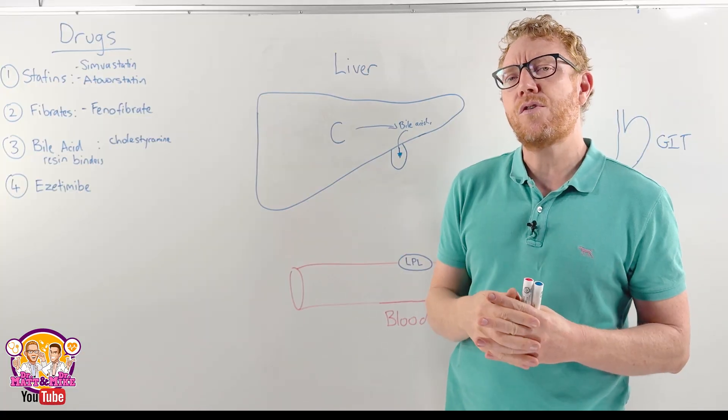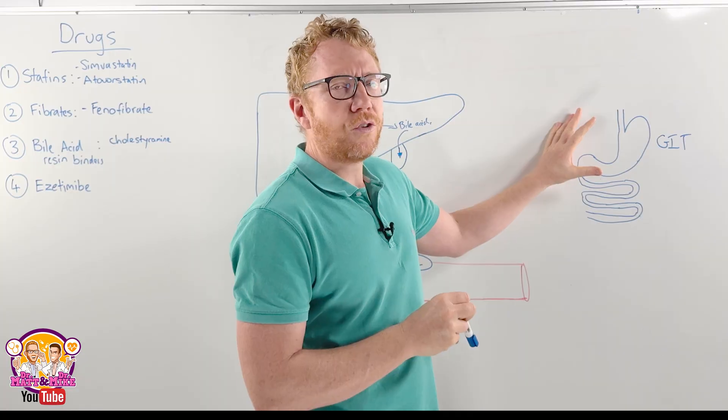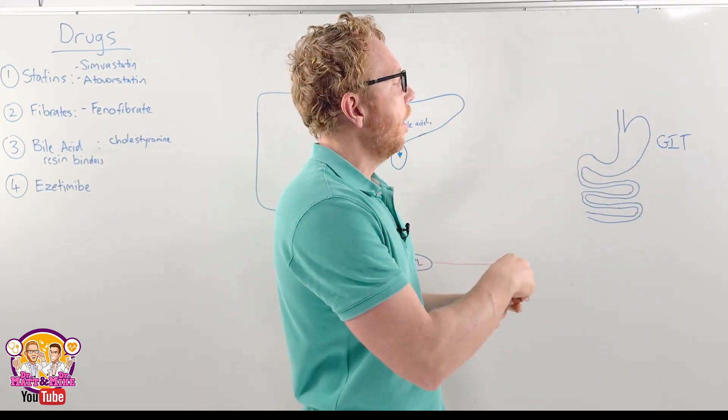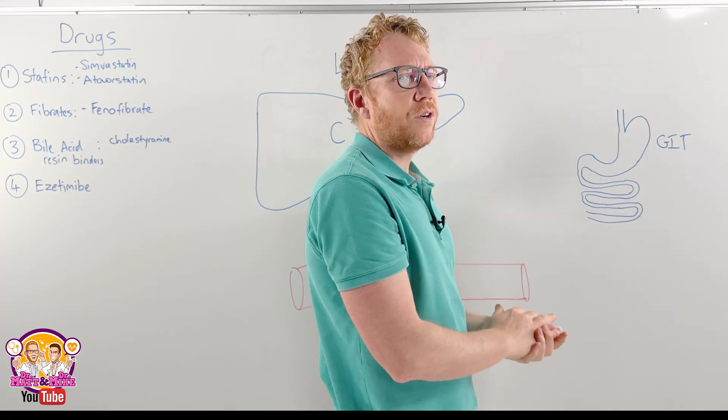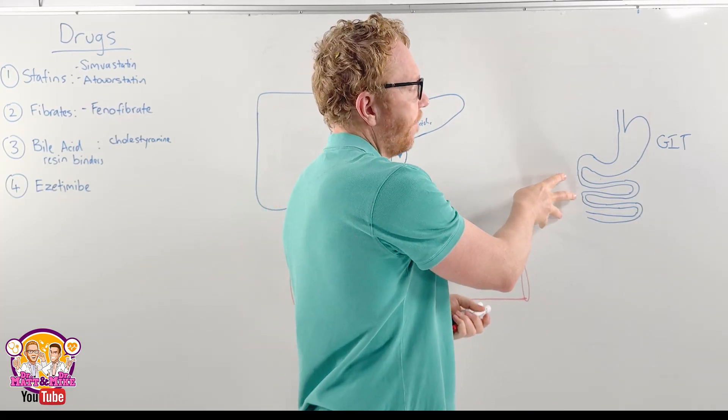So let's firstly go through how we obtain fats through our diet. Coming across here to the gastrointestinal tract, we take in foods that have lipid components. It will get processed through the gastrointestinal tract and then get absorbed across the small intestines.